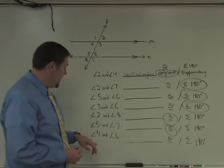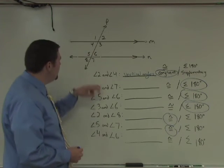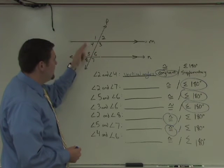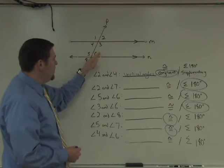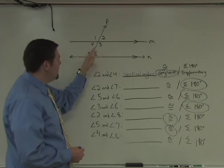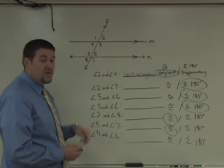And lastly, let's take a look at 4 and 6. 4 and 6 are on the interior of the parallel lines, but on alternate sides of the transversal. We call these angles alternate interior angles. And we proved in class that alternate interior angles are in fact congruent.